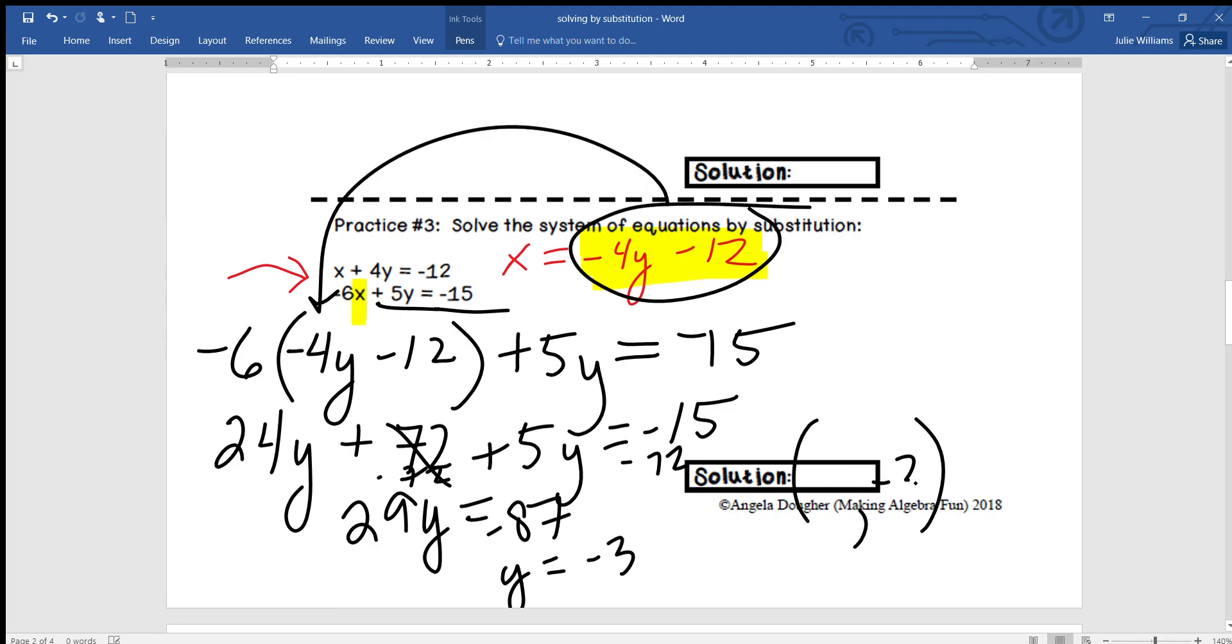Do our distributive property: 24y minus, I'm just kidding, plus 72 plus 5y equals negative 15. So if we combine our y's, we get 29y, and if we subtract 72 on each side, let's see, it goes away over here and you get negative 87. Is that right? So there should be three 29s in 87, right?